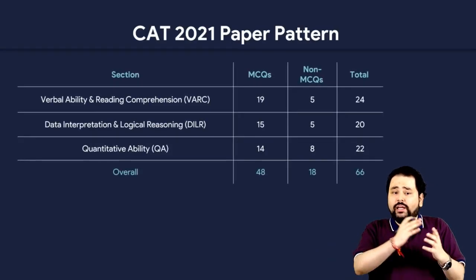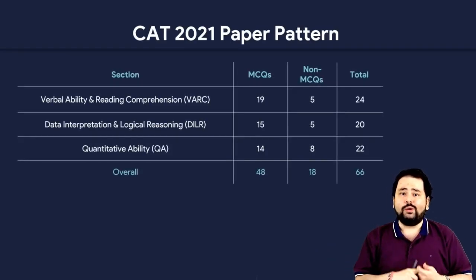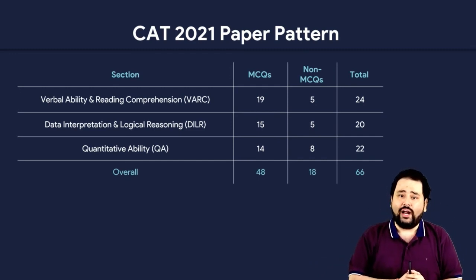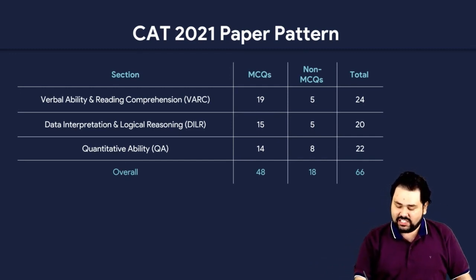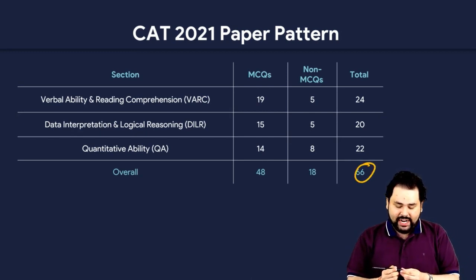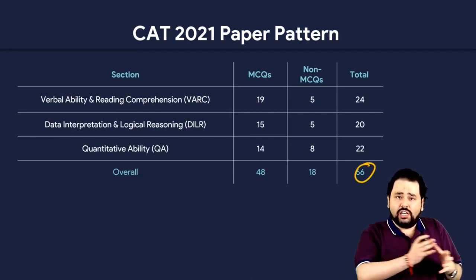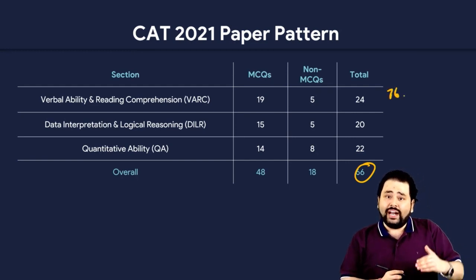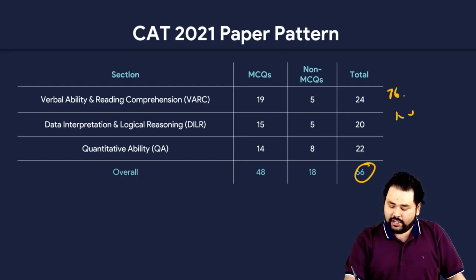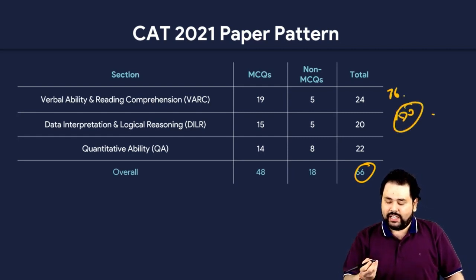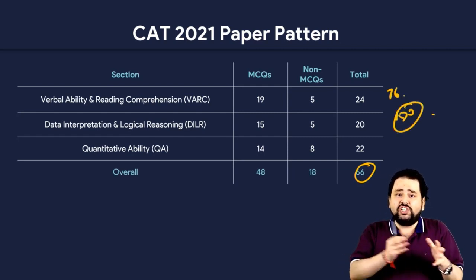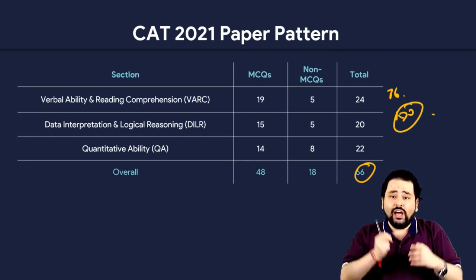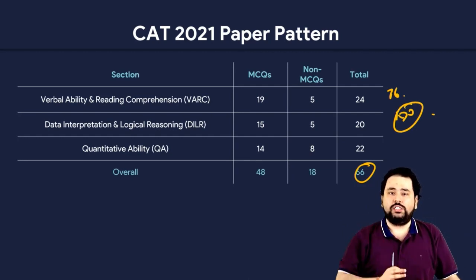CAT basic modalities — what are the important things to keep in mind? Point number one: what is the paper pattern? As per CAT 2021, the paper had 66 questions. CAT 2020 had 76 questions, and before that it had 100 questions. So we are somewhere in the range of 66 to 100, and my understanding is that last year with CAT 2021 they hit a sweet spot.